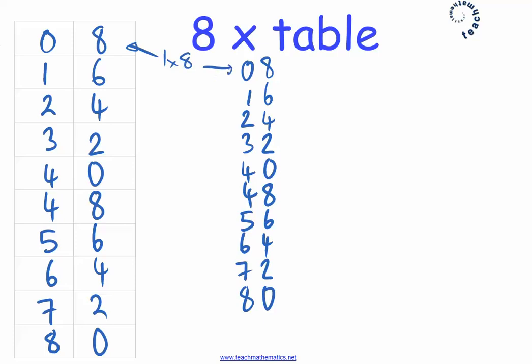The first one is one lot of eight. The second one is two lots of eight, and so on, all the way down to the last, which is ten lots of eight.